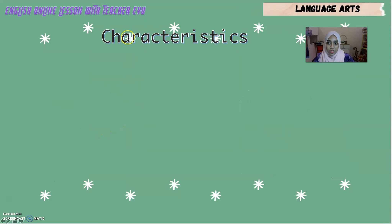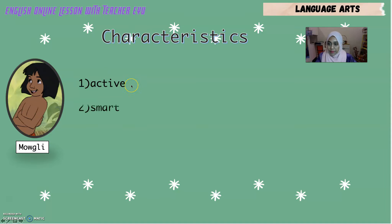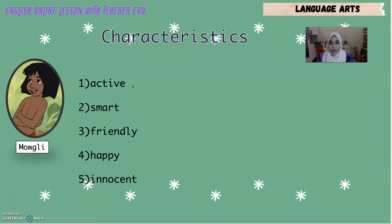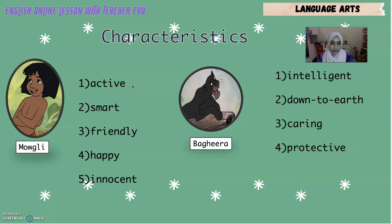Now let's talk about characteristics — characteristics means the features or qualities of a character. For the main character Mowgli, the characteristics are: active, smart, friendly, happy, and innocent. For the next character Bagheera, Bagheera is intelligent, down to earth, caring, protective, and short-tempered.